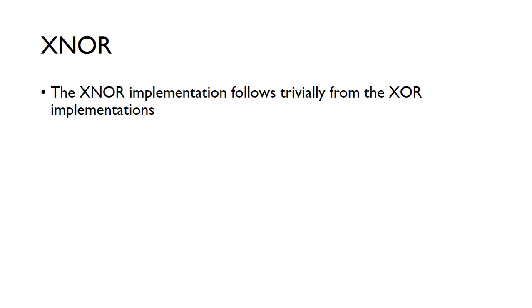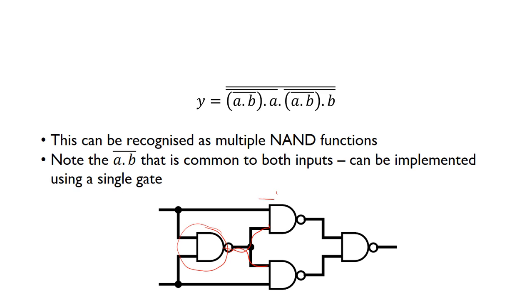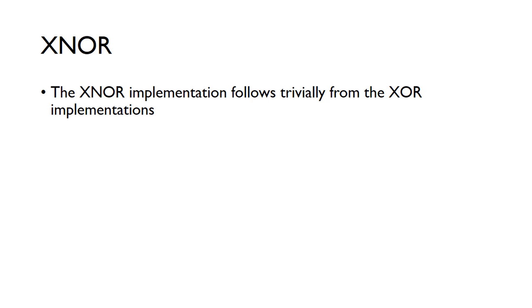And then to get the XNOR is obviously very trivial. We've got our XOR implementation. Then we could just follow that by a NOT. So you can just stick another NAND gate inverter on the front of it, and that will turn the XOR into an XNOR.